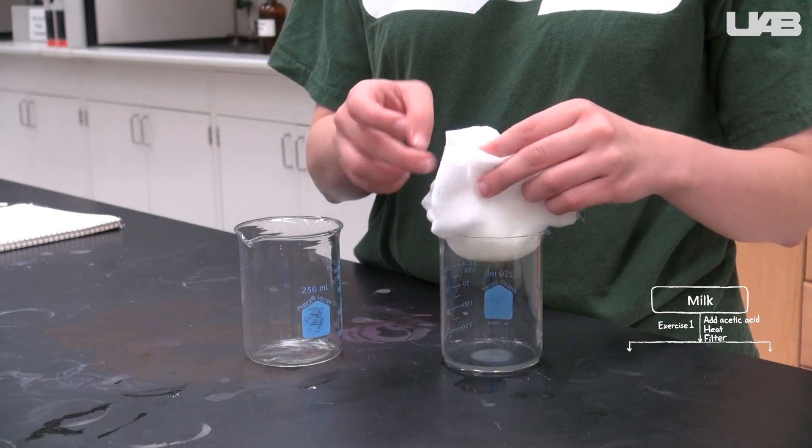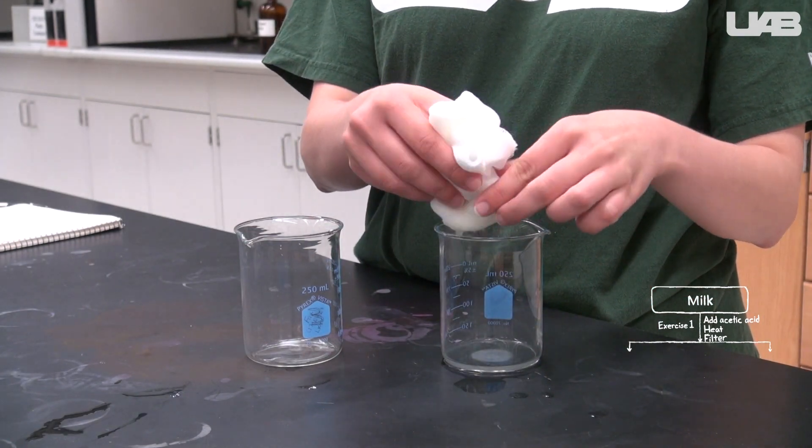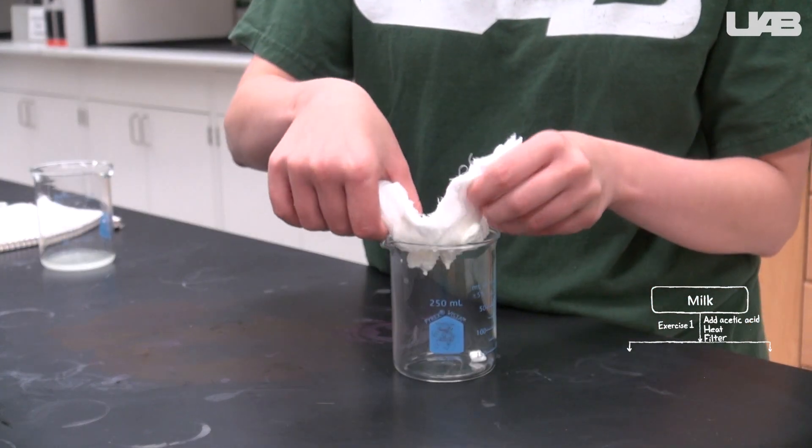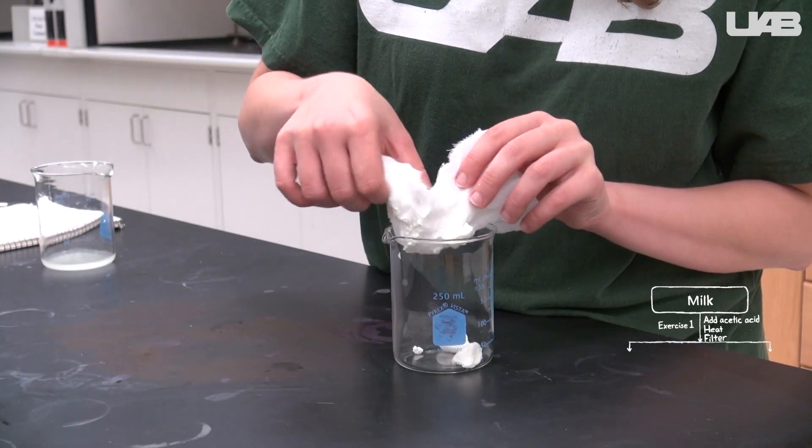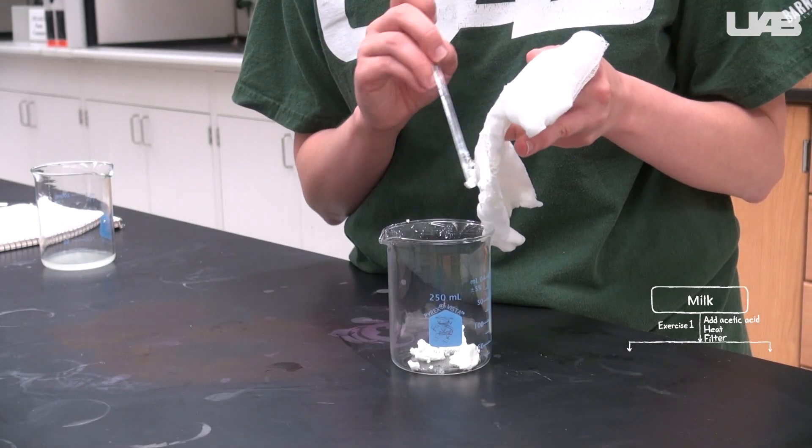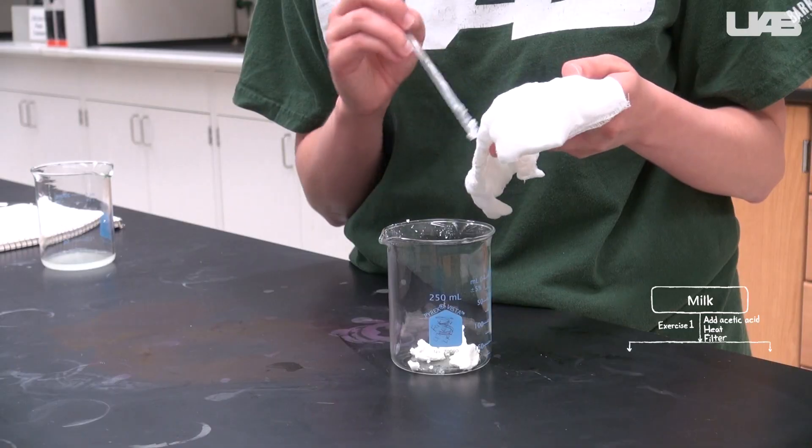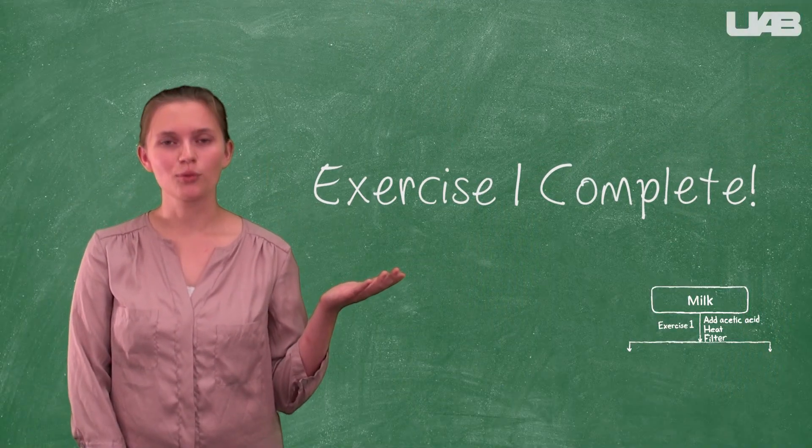Then you can gently press the remaining liquid out of the cheesecloth. Get another beaker and place the protein and fat into it. Aim to get as much off the cheesecloth and into the beaker as you can. At this point, exercise one is complete.